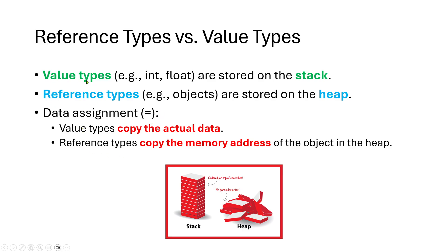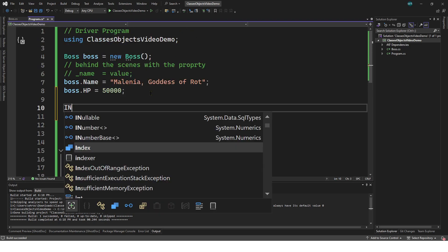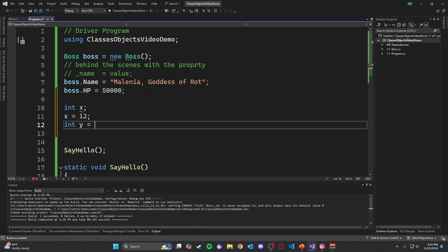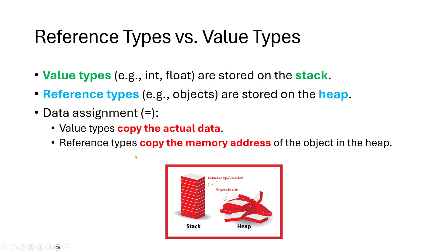When we assign data to a value type variable, the data itself is copied. So if I say int x equals 12 and then int y equals x, y is assigned the actual data 12 because x stores the actual data. For reference types it's more complicated — a reference type variable does not copy the actual data but copies the memory address of the object in the heap. Value types are simple, that's why they're called primitive. Reference types are more complicated, but if you understand what a reference is, it's not too bad.